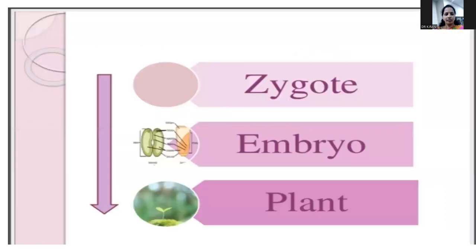Generally, after fertilization, the fertilized egg is called a zygote — also known as oospore. This zygote develops into an embryo. The oospore, before it actually enters into the process, undergoes a period of rest, which may vary from a few hours to a few months. The zygote divides, generally after the first division of the primary endosperm nucleus, though sometimes it divides earlier.